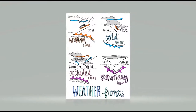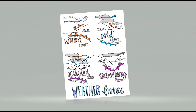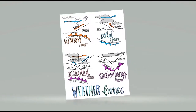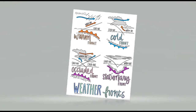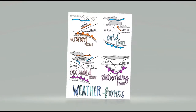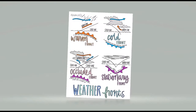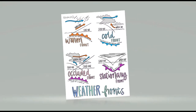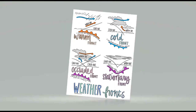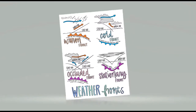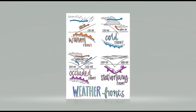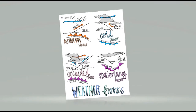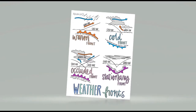When a cold dense air mass overtakes a warm air mass, this is called a cold front. But when a warm air mass is caught between cooler air masses, it gets pushed up, and that's called an occluded front.